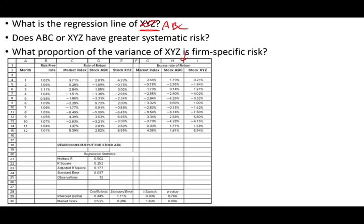Okay, so when we run the regression, we're going to have this output. Remember, the regression line, if you remember from the formula, is going to be alpha plus beta times the risk premium plus epsilon, the residual risk. That's the firm risk. Now, what is alpha? Alpha is the intercept.